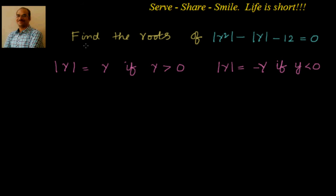Hello friends, welcome back. Hearty welcome to you. In this session we will see how to find out the roots of a quadratic equation when absolute value or modulus is involved. We have to find out the roots of the equation: absolute value of y squared minus absolute value of y minus 12 equals 0.